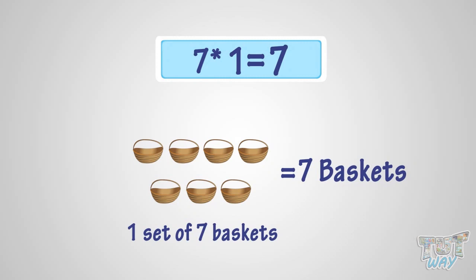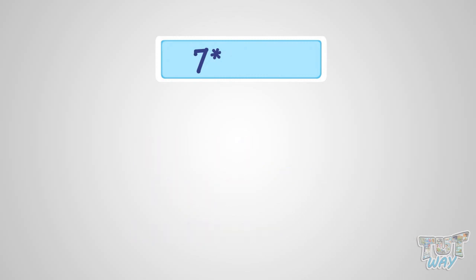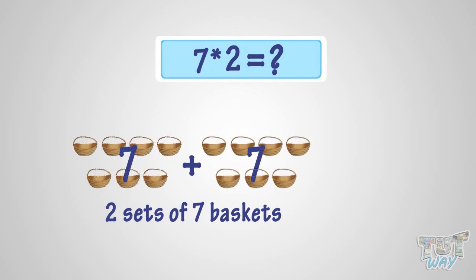What is 7 multiplied with 2? It is the same as two sets of 7 baskets. So, it is 14 baskets. That is, 7 multiplied by 2 is 14.